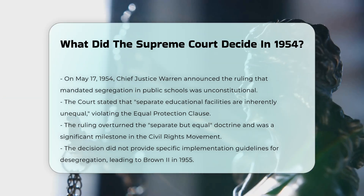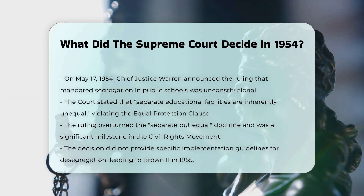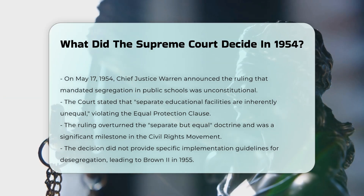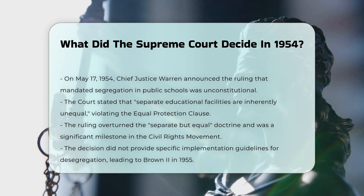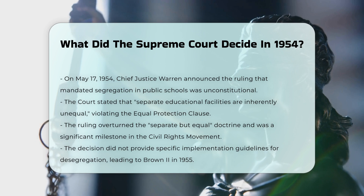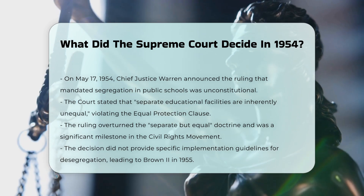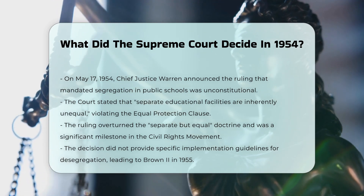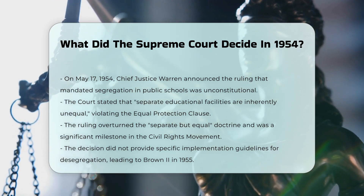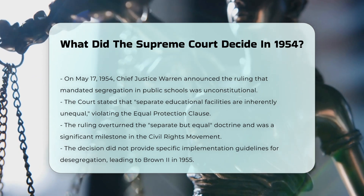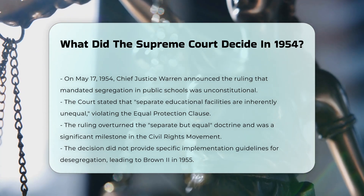However, the decision did not specify how to implement desegregation, leading to a follow-up decision in Brown II in 1955, which ordered states to desegregate with all deliberate speed.